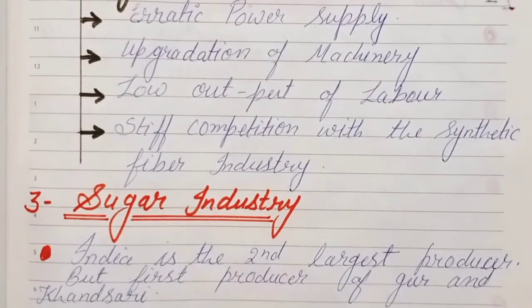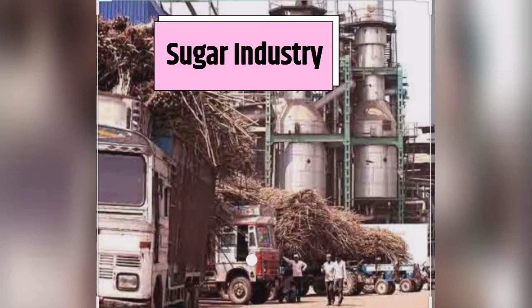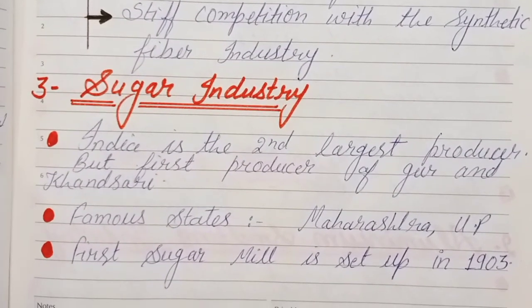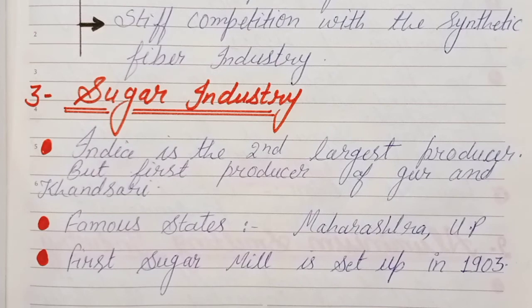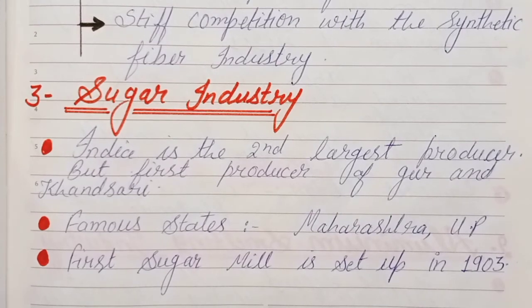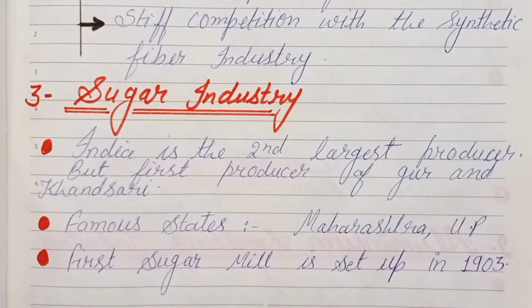The last agro-based industry is the sugar industry. India is the second largest producer of sugar in the world. The first sugar mill was set up in 1903.